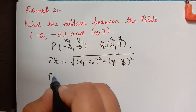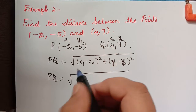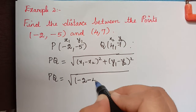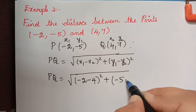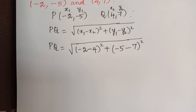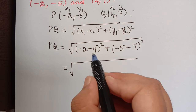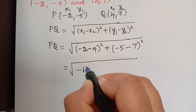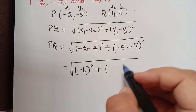So now we shall substitute here. PQ will be equal to square root of: x1 is minus 2, minus x2 which is 4, the whole square, plus y1 is minus 5, minus y2 which is 7, the whole square. So this gives us square root of (minus 2 minus 4) squared plus (minus 5 minus 7) squared, which is square root of (minus 6) squared plus (minus 12) squared.